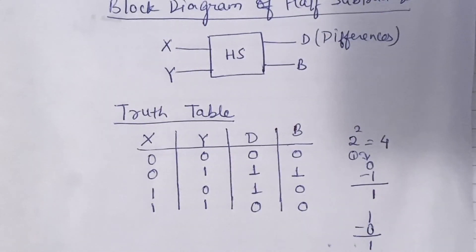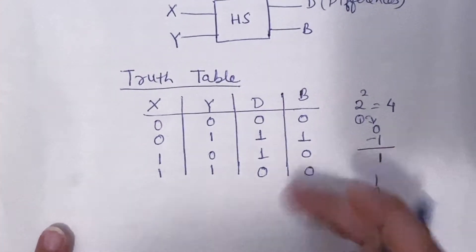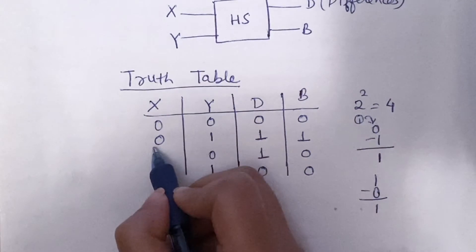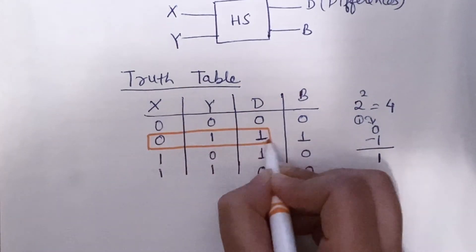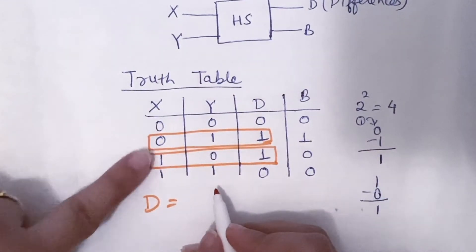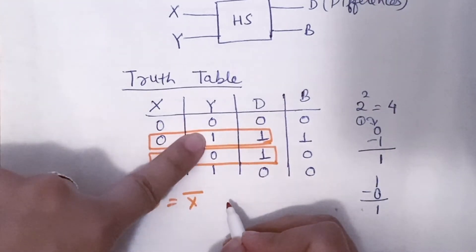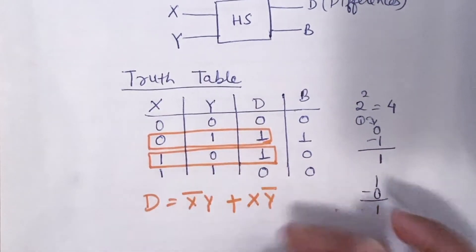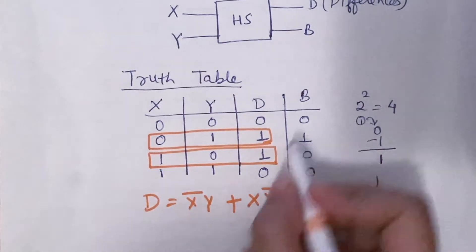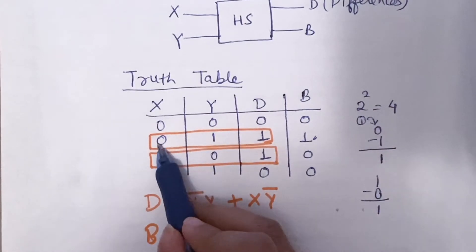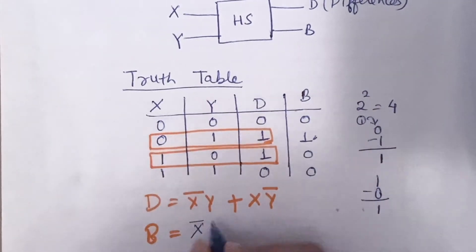Now we will find the Boolean expression for the difference D and the borrow B. For D, we have two ones in the truth table. For the first one, X is 0 (so X-bar) and Y is 1, giving X-bar·Y. For the second one, X is 1 and Y is 0, giving X·Y-bar. So the Boolean expression for D is X-bar·Y + X·Y-bar. For the borrow B, we have only one entry: X is 0 (X-bar) and Y is 1, so B = X-bar·Y.